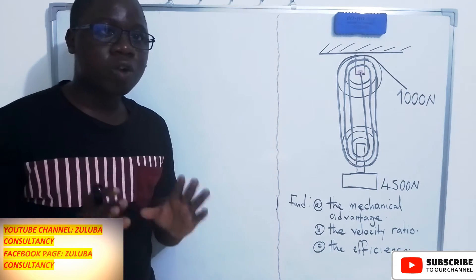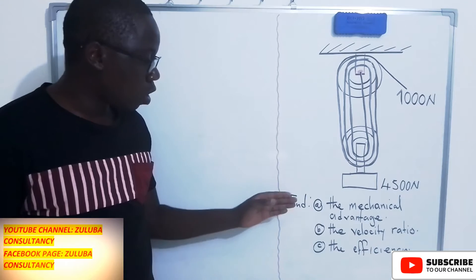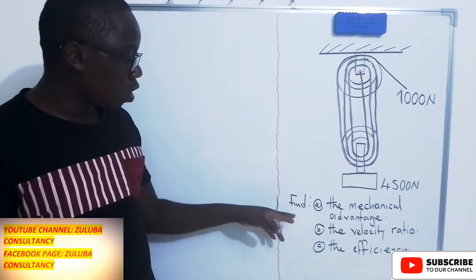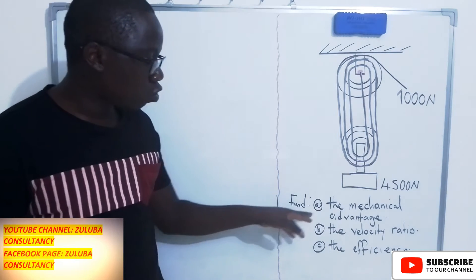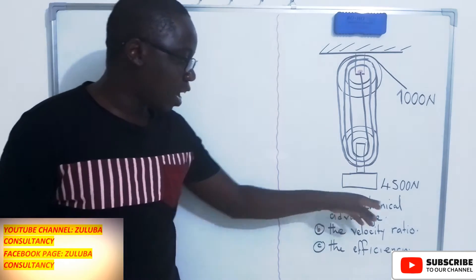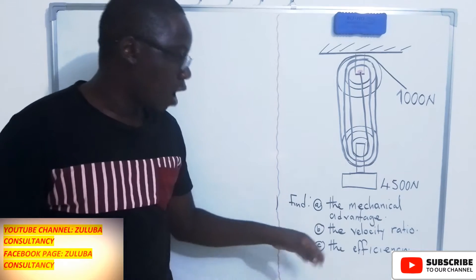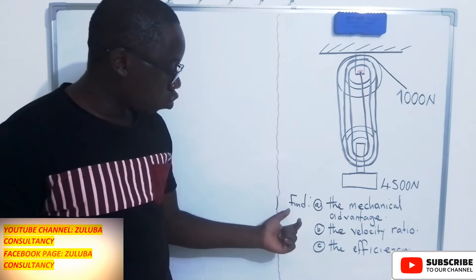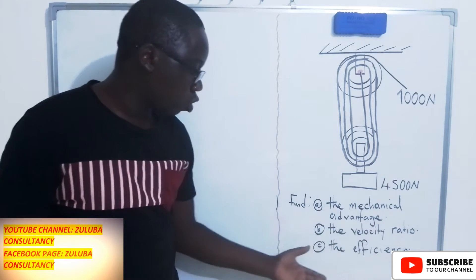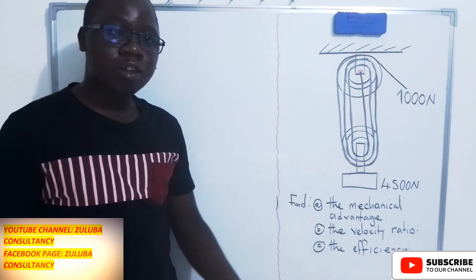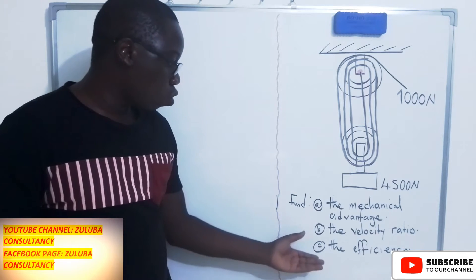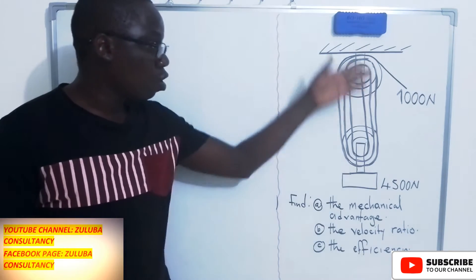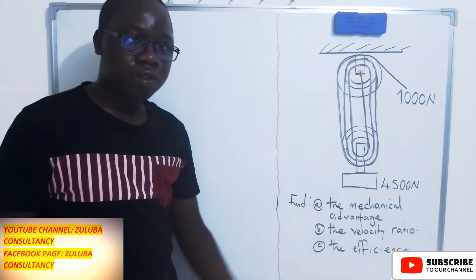We have three questions that we want to answer in this video. The first one is asking us to find the mechanical advantage. Then we will also find the velocity ratio, and last but not least, we will find the efficiency of this pulley system.